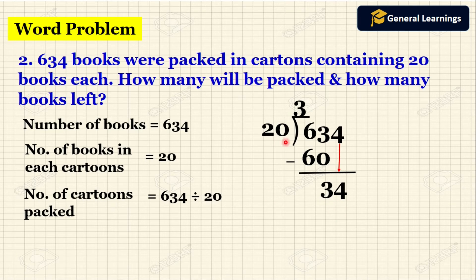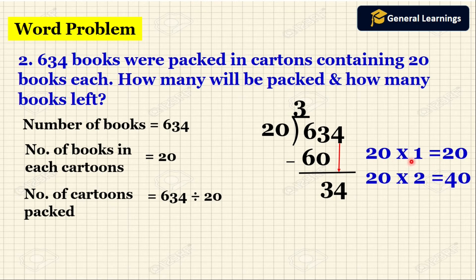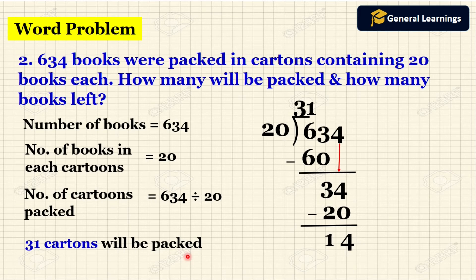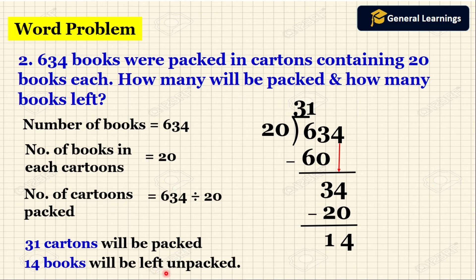Now we need to divide 34 by 20. Checking the table of 20: 20 ones are 20, 20 twos are 40. Since 40 is greater than 34 we should not take that, so we use 20 ones are 20. Write 1 in the quotient, write 20 below 34, draw a line, and subtract. 34 minus 20 gives us 14. So how many cartons were packed? 31 cartons were packed. And how many books were left? The remainder is always what is left over, so 14 books will be left.